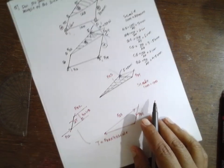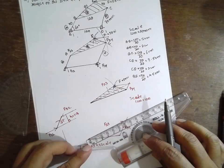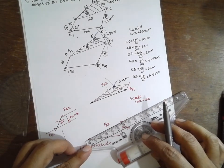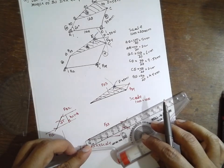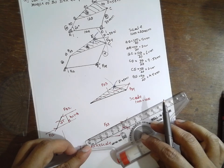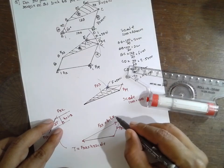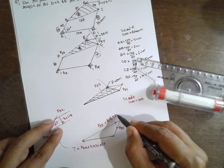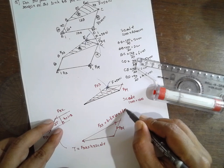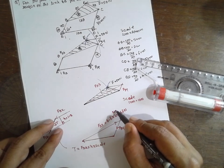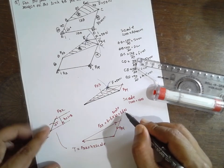Now, what is F32? Find the value of F32. F32 is nothing but 6.6 into scale. What is the scale here? 10. It will be 66 Newton. Now, substitute here.